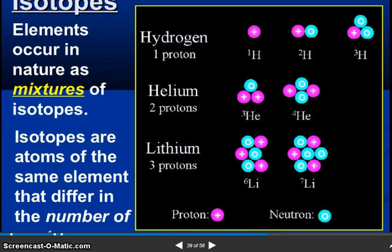Now isotopes. Elements occur in nature as a mixture of isotopes. Isotopes are atoms of the same element that differ in the number of neutrons. So hydrogen has 1 proton, helium has 2 protons, lithium has 3 protons.